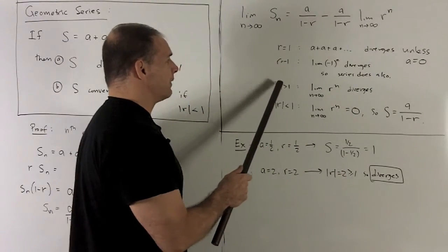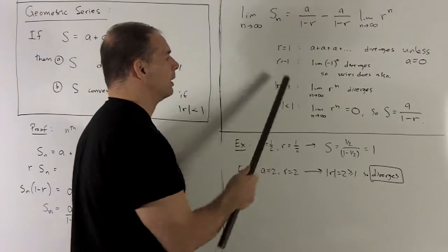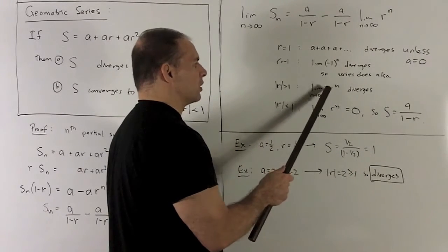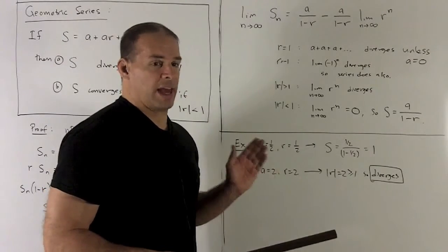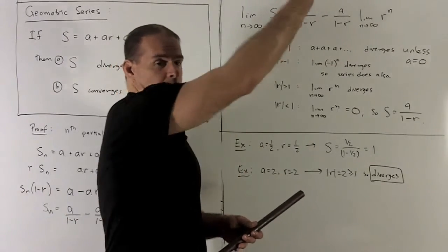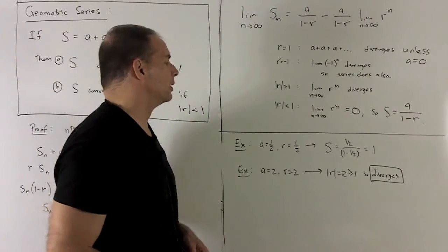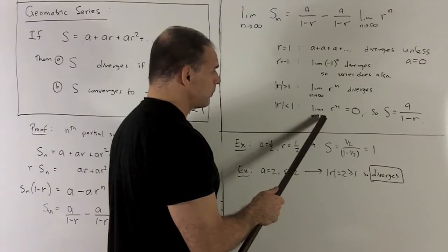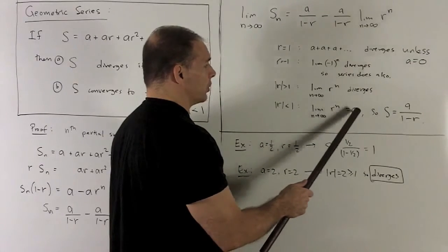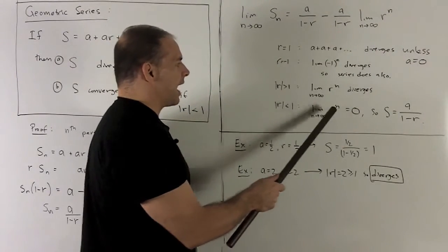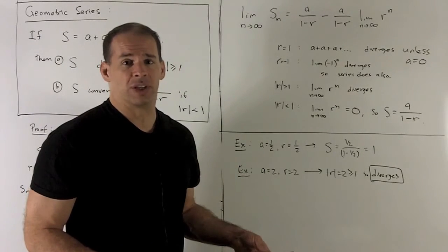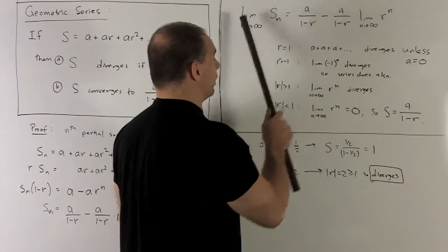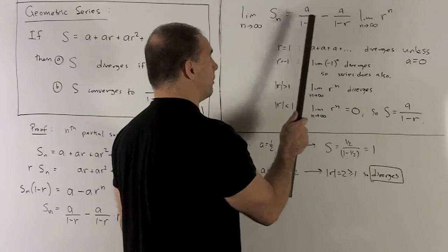If the absolute value of r is bigger than one, the limit as n goes to infinity of r to the n is always going to diverge — it's like looking at x raised to the nth power shooting up and out. If r is less than one in absolute value, then the limit as n goes to infinity of r to the n goes to zero. Think of having a half in there: as you raise a half to higher and higher powers, it gets driven down to zero. So the term goes to zero, and what's left over is a over one minus r.